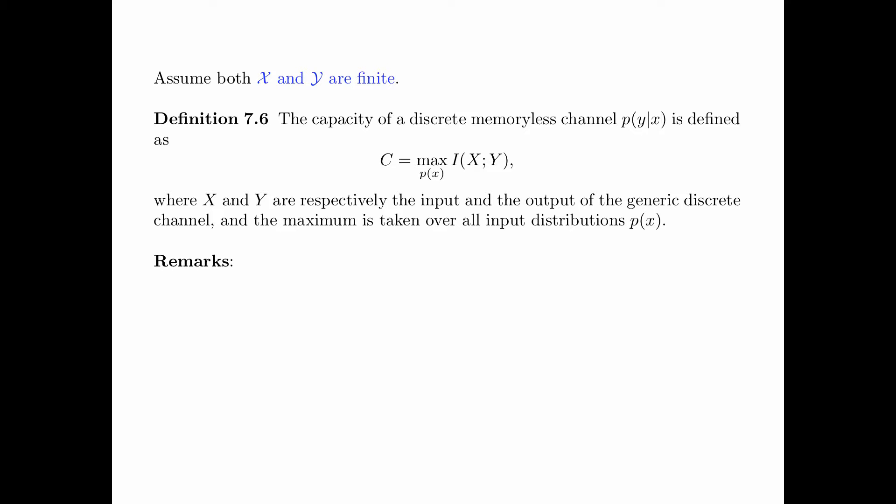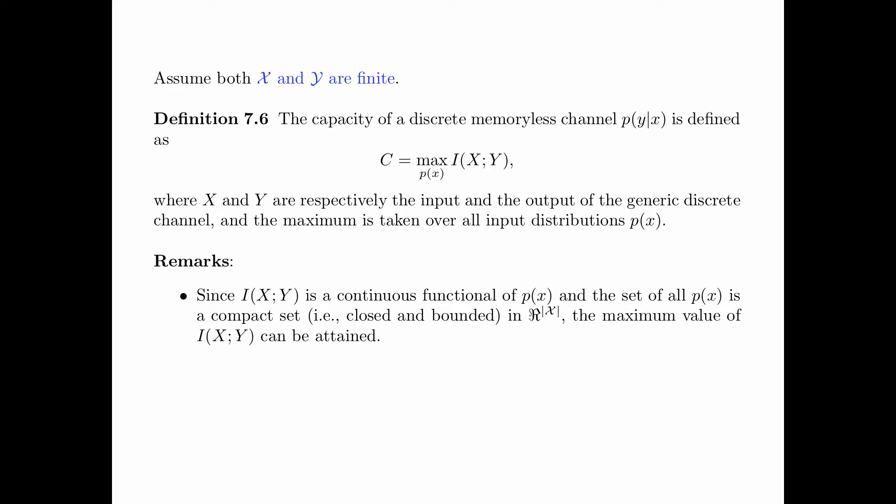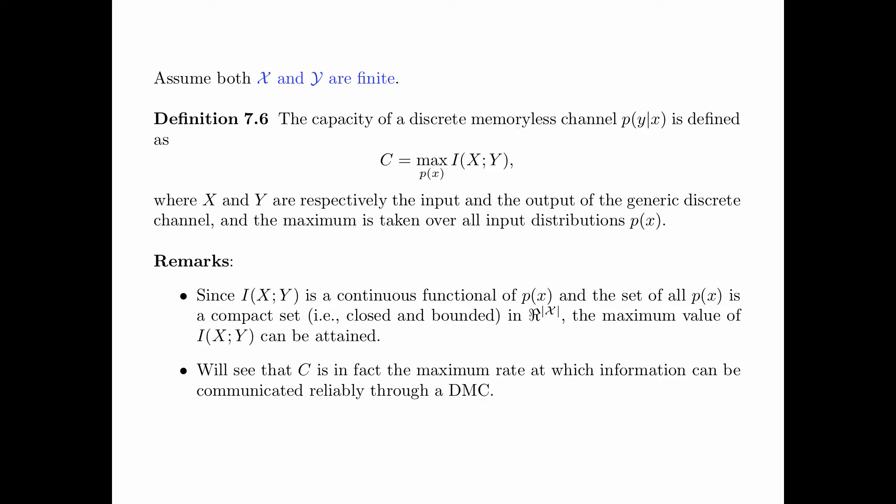Since I(X;Y) is a continuous function of PX, and the set of all PX is a compact set — closed and bounded in the Euclidean space with dimension equal to the size of the input alphabet — the maximum value of I(X;Y) can be attained. C is in fact the maximum rate at which information can be communicated reliably through a DMC. It is possible to communicate through a channel at a positive rate while Pe, the error probability, tends to zero.